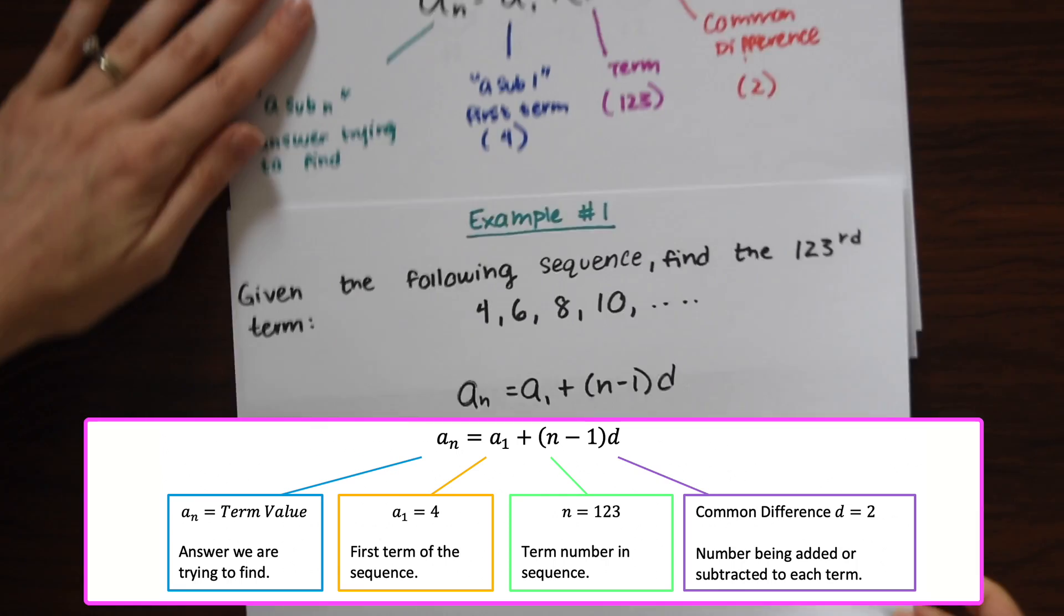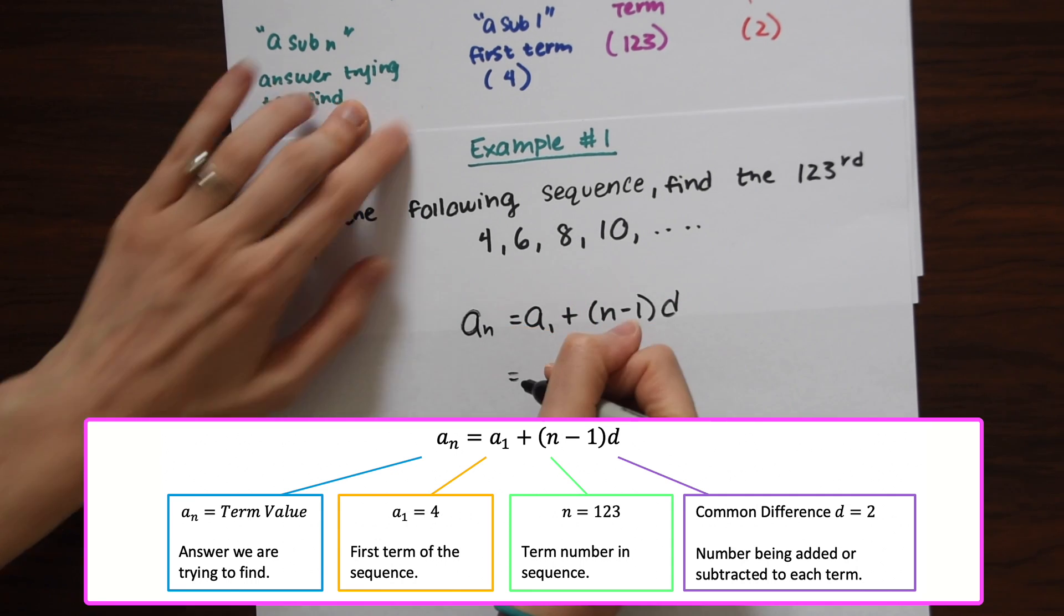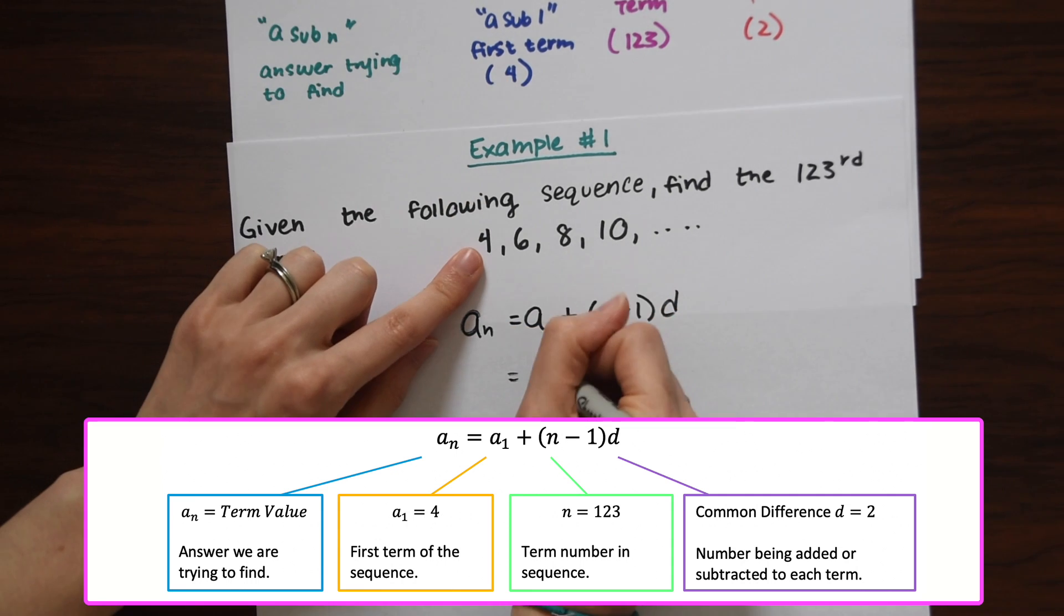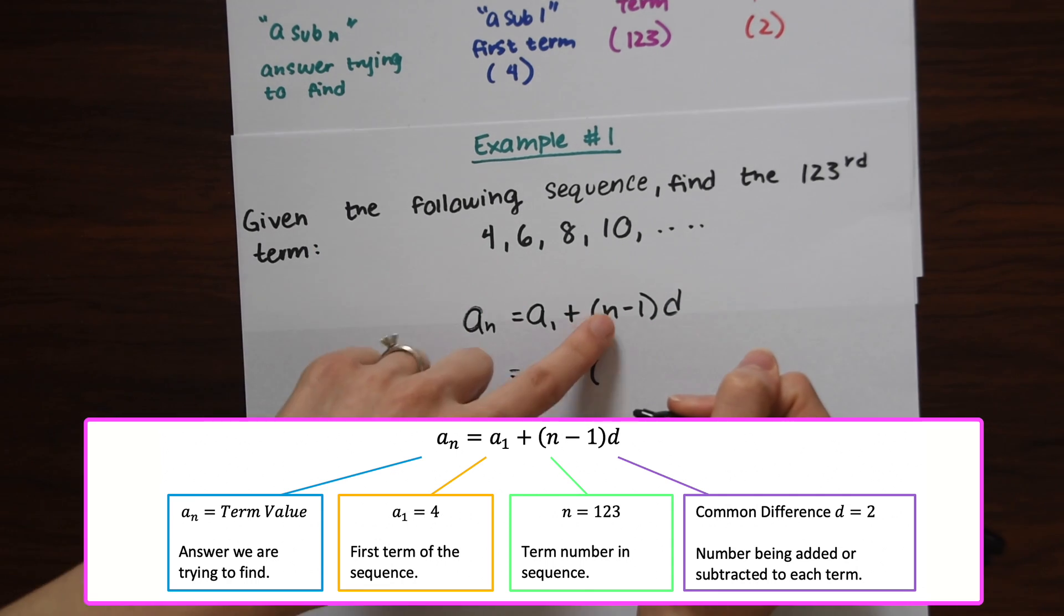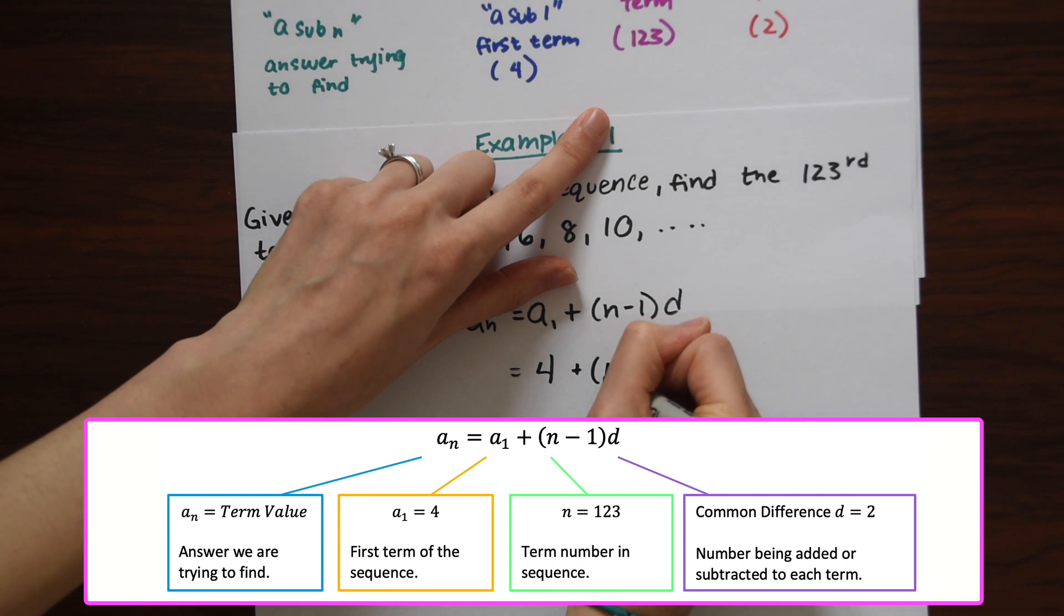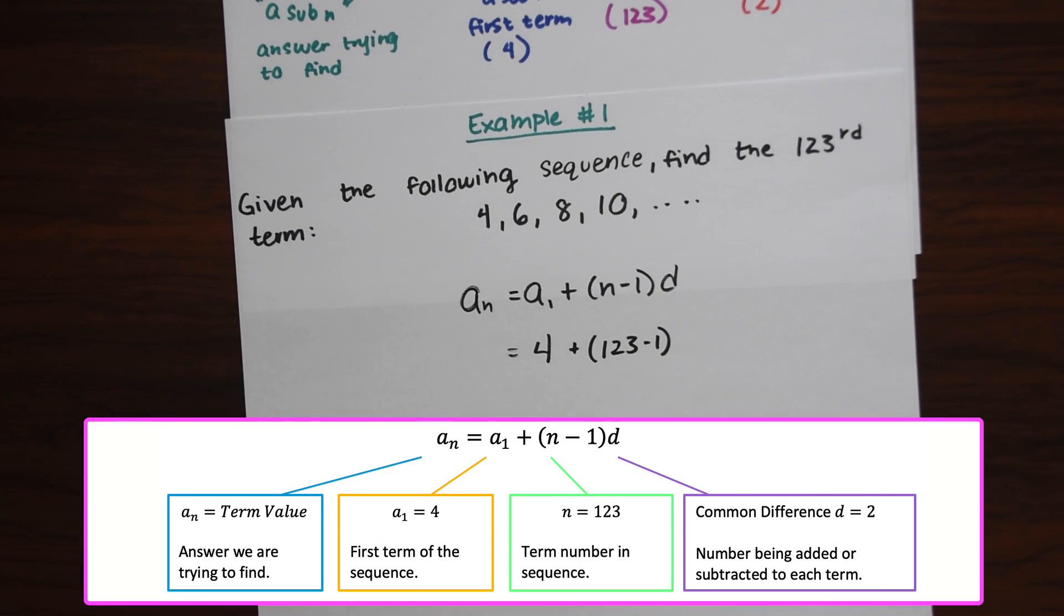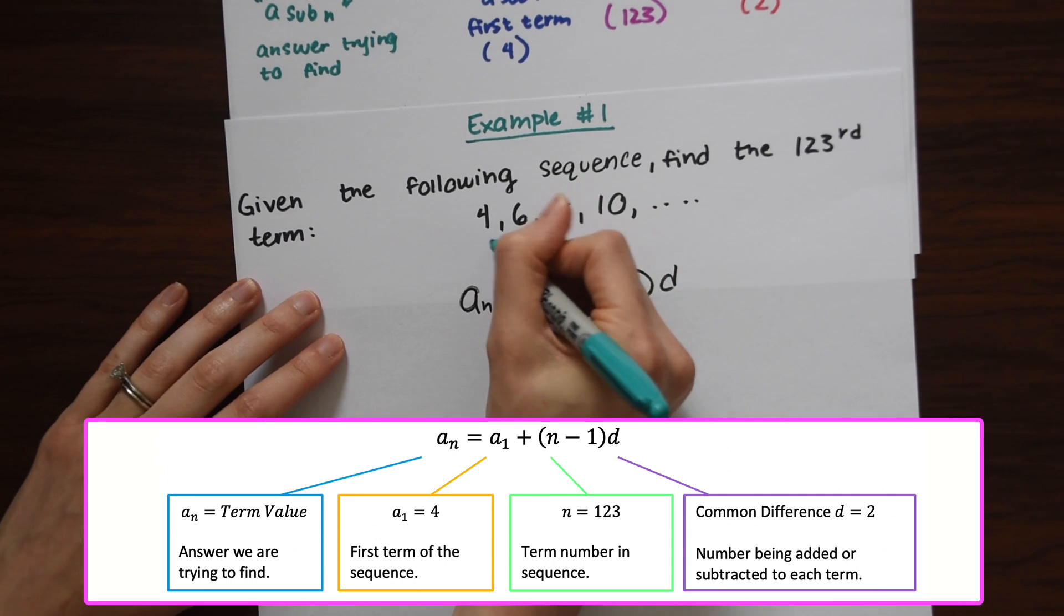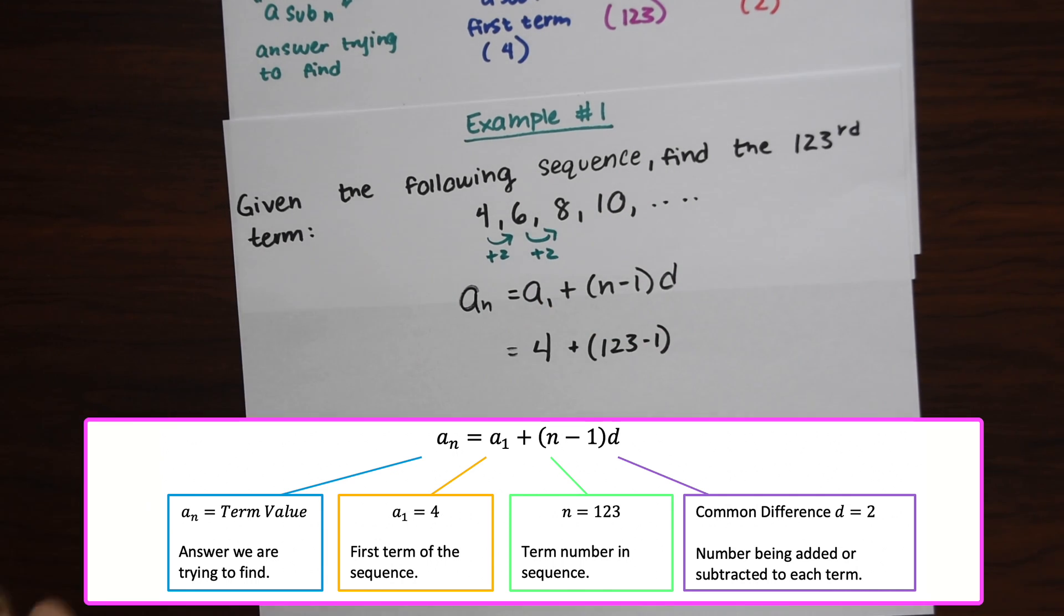So now let's just fill it in with what we know. We're trying to find this, so we're going to leave this blank. The first term is 4. We're trying to find the 123rd term, which is 123 minus 1, and then times the common difference, which is 2, because we're always adding 2 in this sequence here. So remember this is plus 2 plus 2. So we're going to put 2 here.